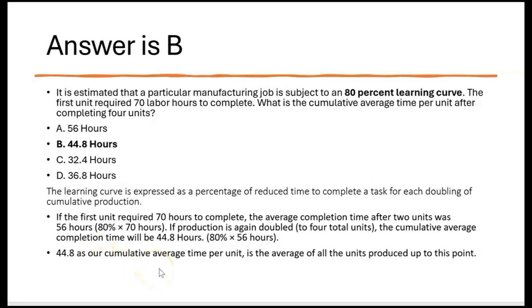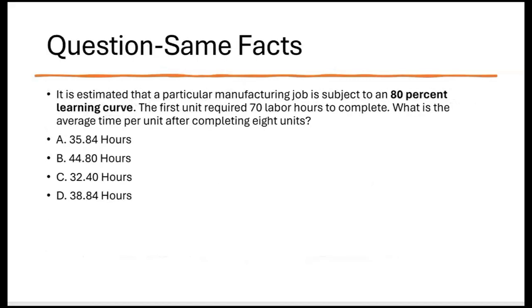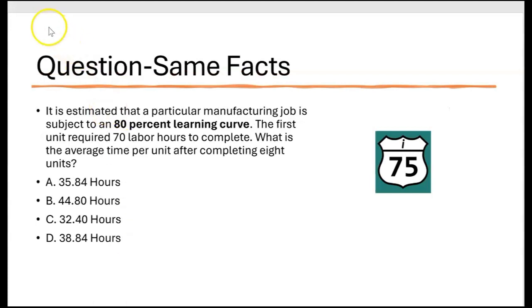This doesn't mean it's taking 44.8 hours to produce units — this is just an assumption based on the 80% learning curve. Every time production doubles, we should see 80% efficiency — an 80% learning curve means 20% efficiency improvement compared to the last time production doubled. Same facts: 'What is the average time per unit after completing eight units?' If you think you know, leave me the answer in the comment section.